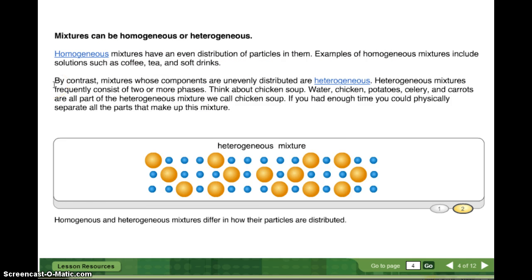By contrast, mixtures whose components are unevenly divided are heterogeneous. So this time think of layers. Heterogeneous mixtures frequently consist of two or more phases. Think about chicken soup. Water, chicken, potatoes, celery, and carrots are all part of the homogenous mixture we call chicken soup. So every single spoonful is not going to be exactly the same. If you had enough time, you could physically separate all the parts that make up the mixture.